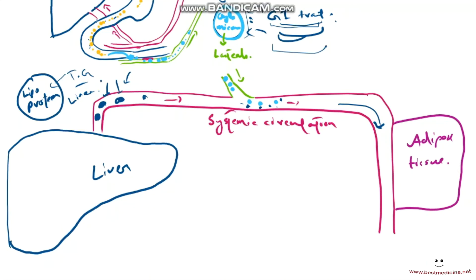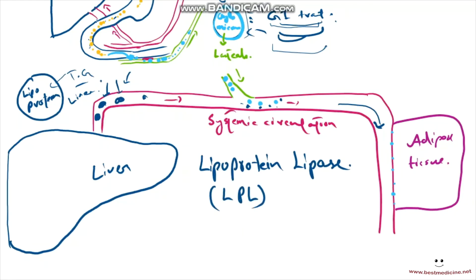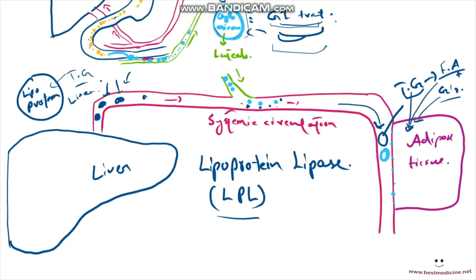When chylomicrons and lipoproteins reach the capillary bed of the adipose tissue, the adipose tissue contains receptors that detect special proteins on these molecules. Upon reception, the capillary bed releases an enzyme called lipoprotein lipase, or LPL. LPL digests the triglycerides in the chylomicrons and lipoproteins, breaking them down into fatty acids and glycerol. These fatty acids and glycerol are then absorbed into the adipose tissue.